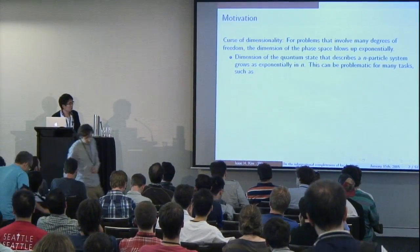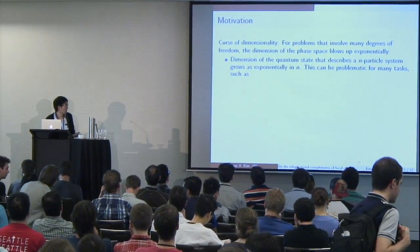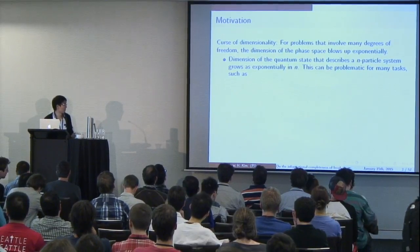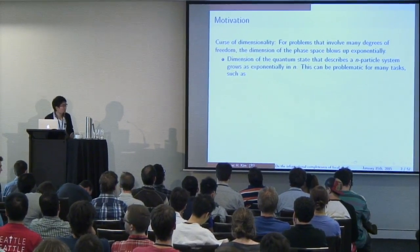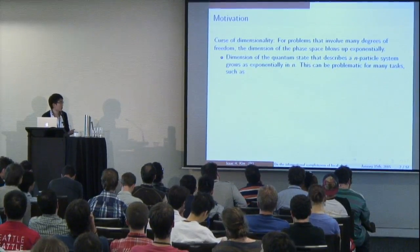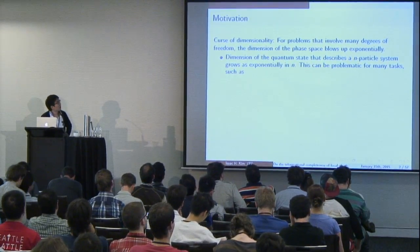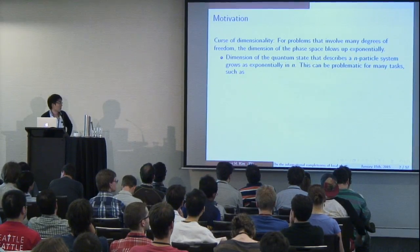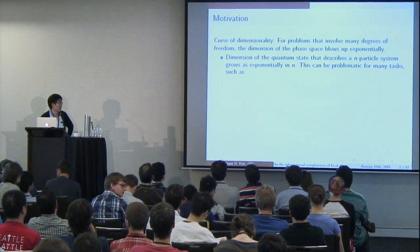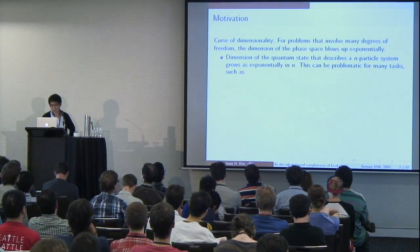So to this audience, it's no secret that dealing with a large number of qubits is kind of problematic in many instances. Quite rightly, the reason for this is usually attributed to the exponential blowup of the Hilbert space, meaning that if you have an n-particle system, the dimension of the system generally grows as exponential of n, and this can be potentially problematic for many tasks.